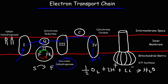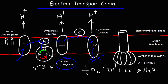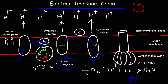As electrons are transferred through these membrane proteins across the electron transport chain, protons are pumped from the mitochondrial matrix into the intermembrane space. Each of these transmembrane proteins pumps protons into the intermembrane space, resulting in a buildup of positive charge there — so the pH in the intermembrane space is going to be relatively low. The mitochondrial matrix will be less positive, or more negative, relative to the intermembrane space.